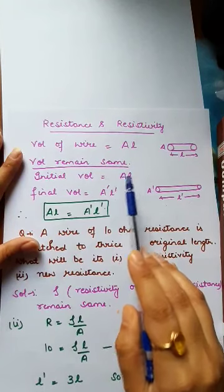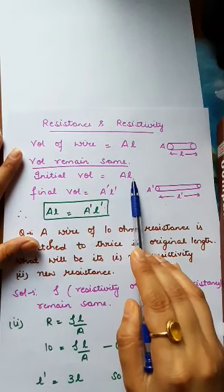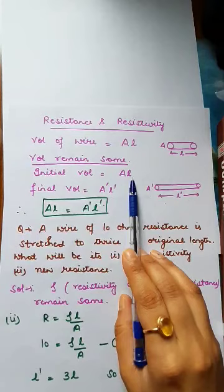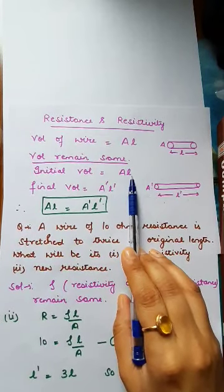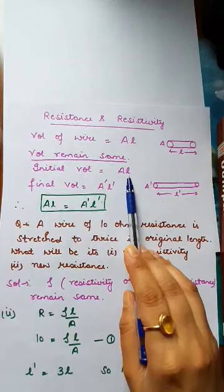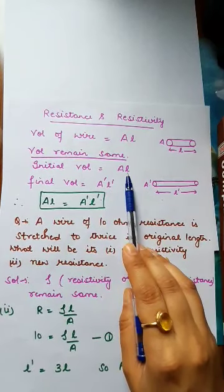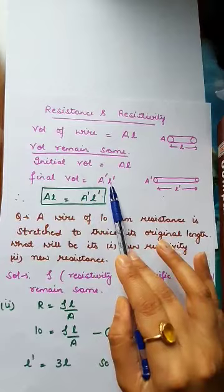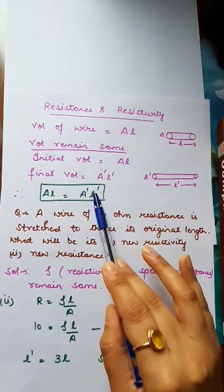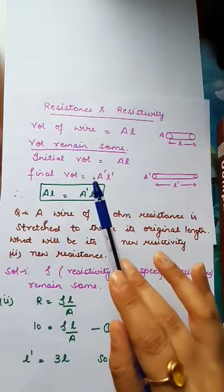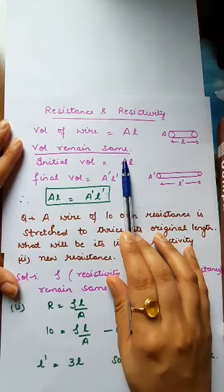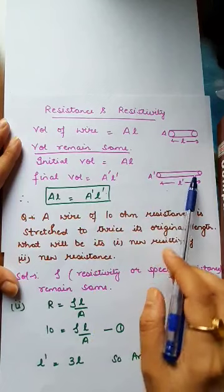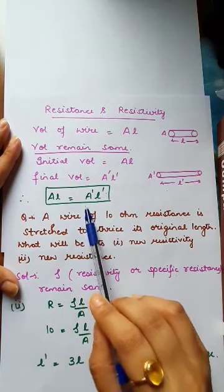For example, if initial area is 2 and initial length is 5, and you compress it so new length is 2 and new area is 5, the product — which is the volume — remains the same. The volume is always conserved when you stretch or compress a wire.